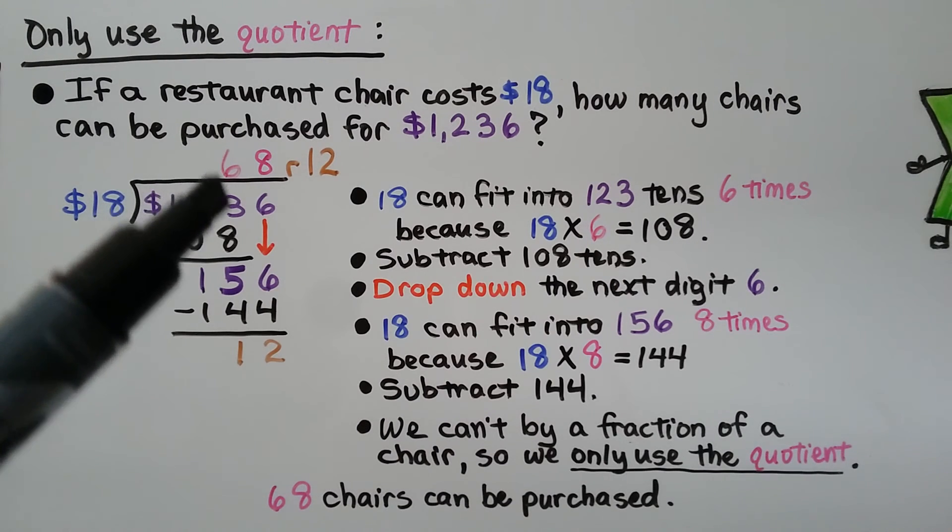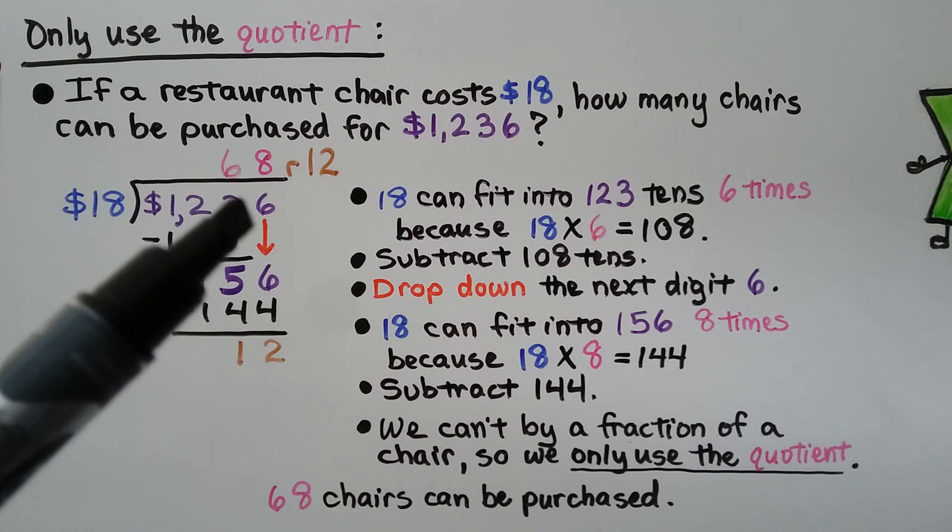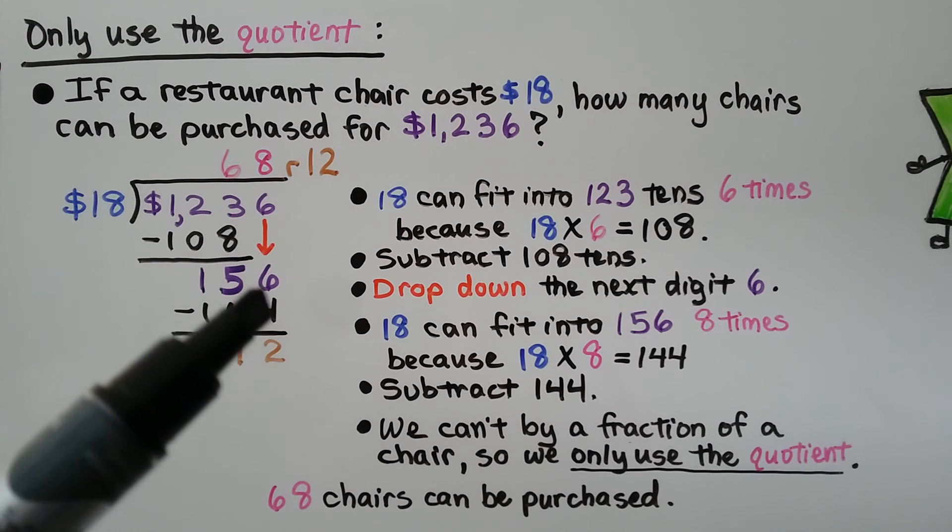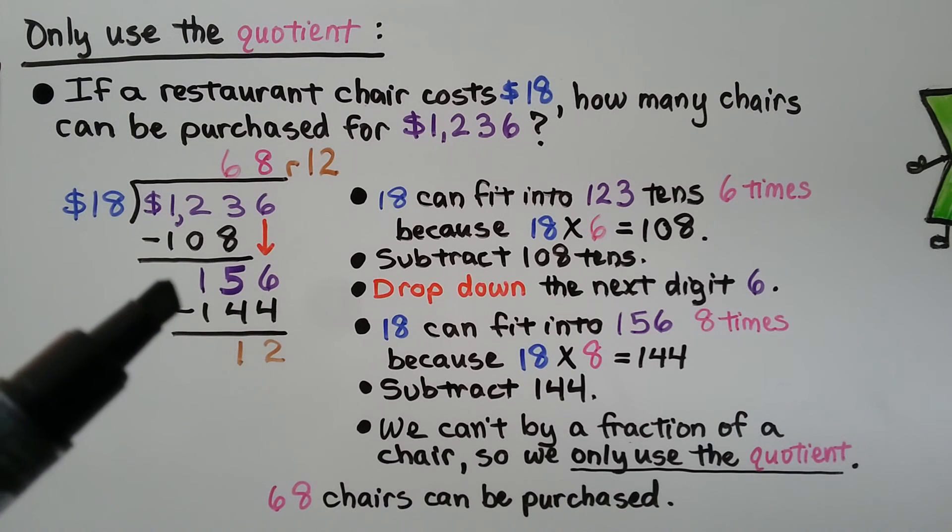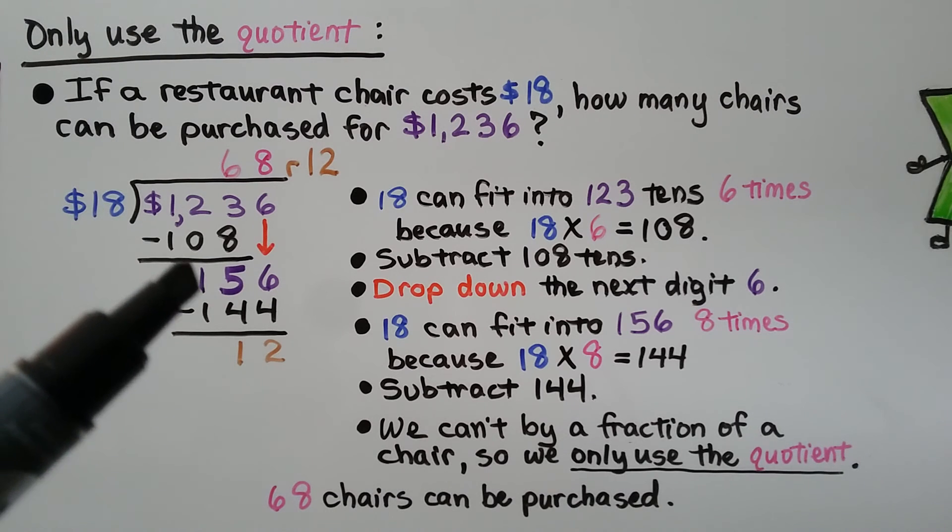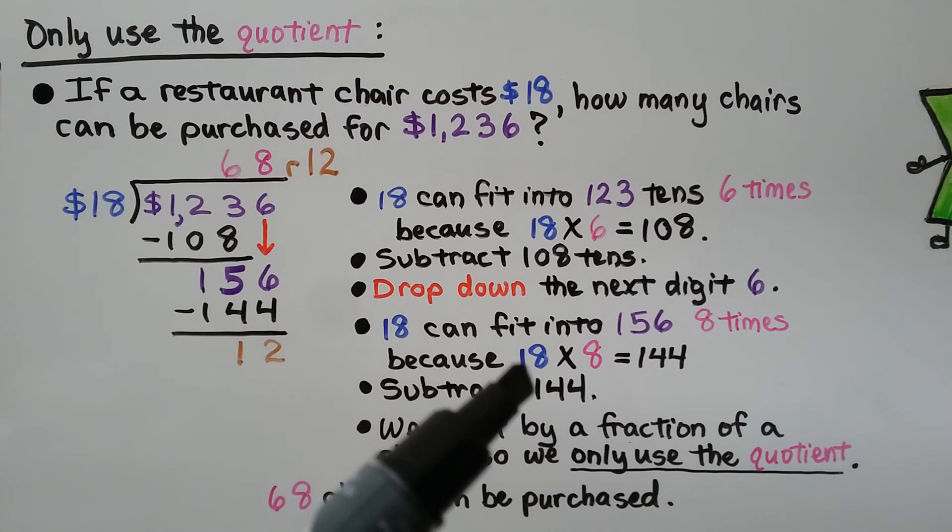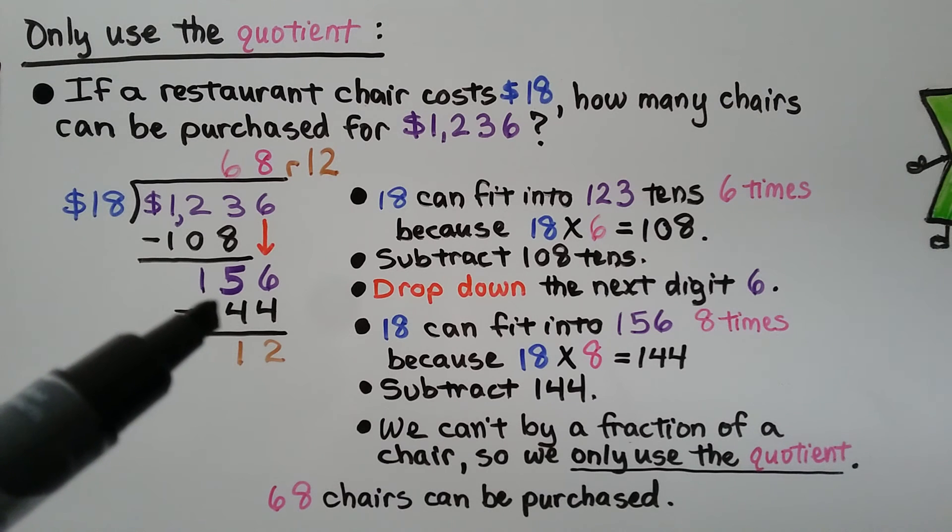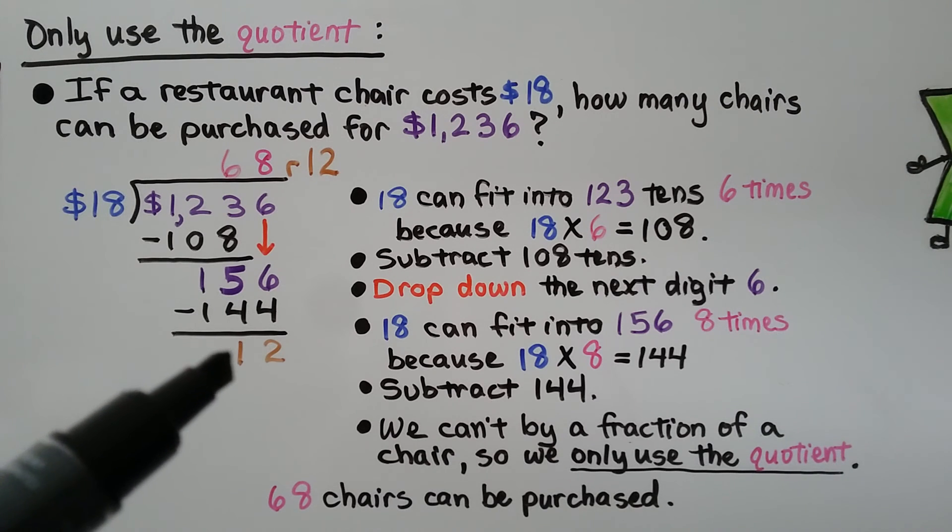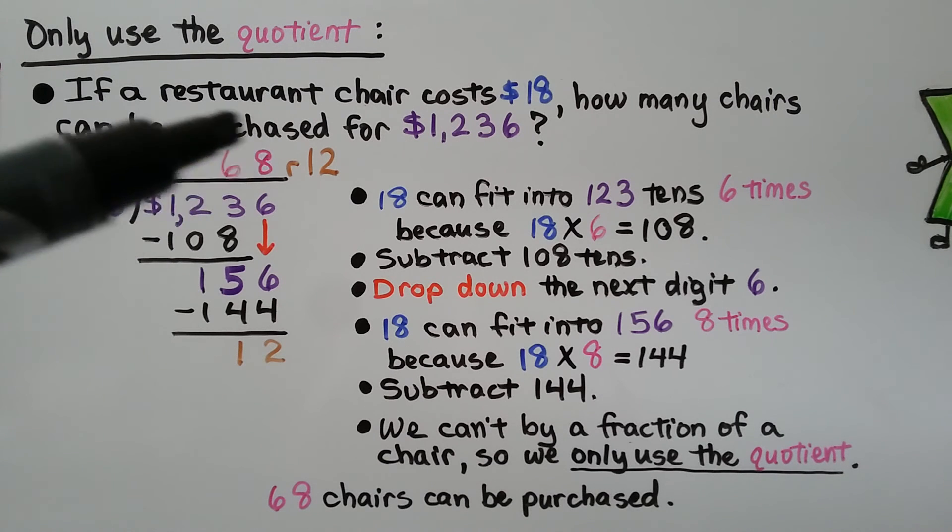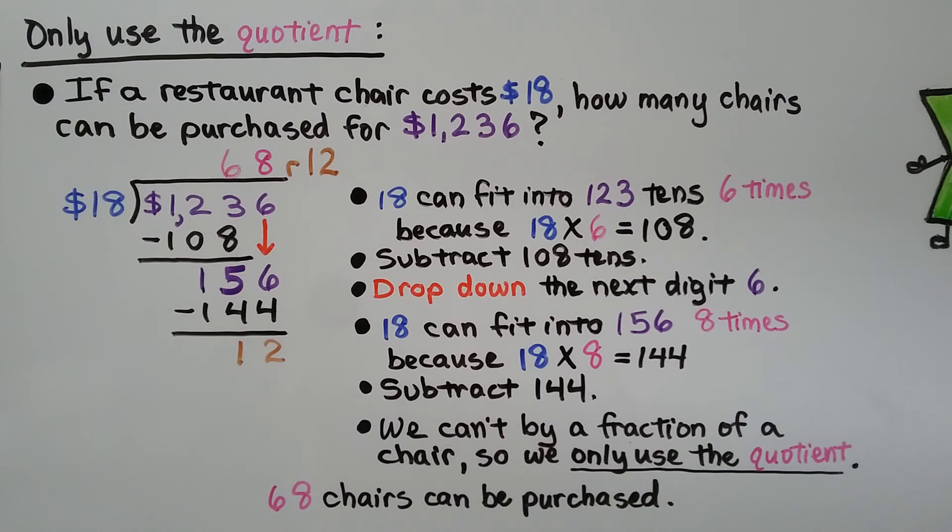18 can fit into 123 10s 6 times because 18 times 6 is equal to 108. We write a 6 above the 3 for the 123 10s. We subtract 108 10s and we get 15. And now it's the 6's turn to come down. Now we have 156 divided by $18. 18 can fit into 156 8 times because 18 times 8 is equal to 144. We subtract the 144 and we get 12 left over. And we can't buy a fraction of a chair, so we only use the quotient. He can buy 68 chairs. 68 chairs can be purchased.